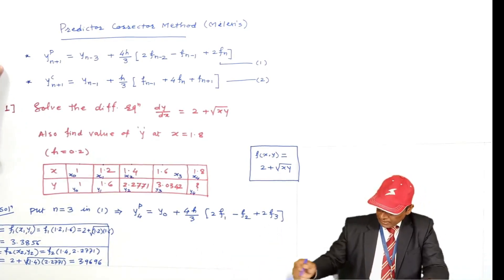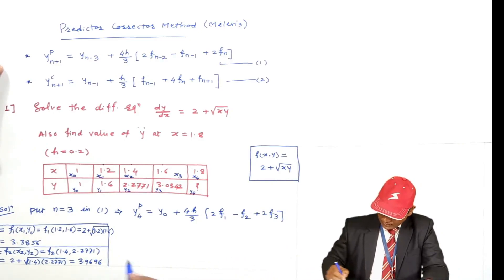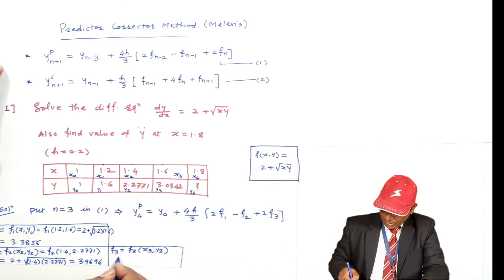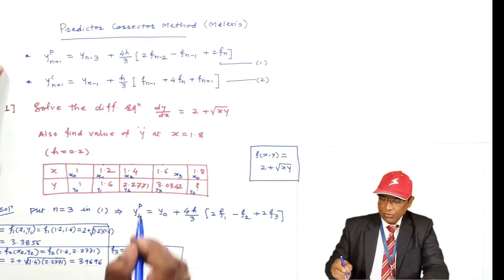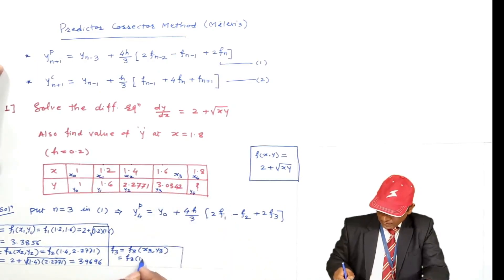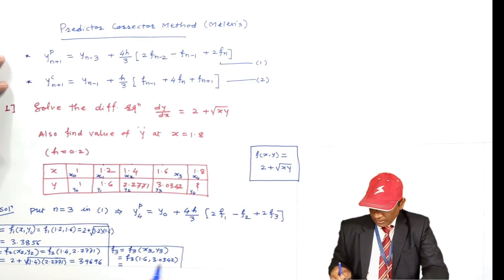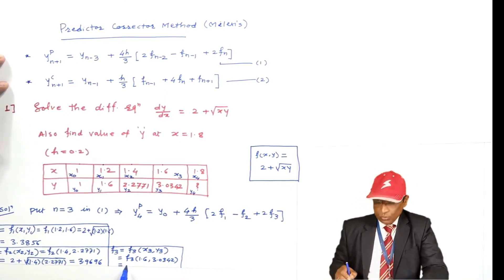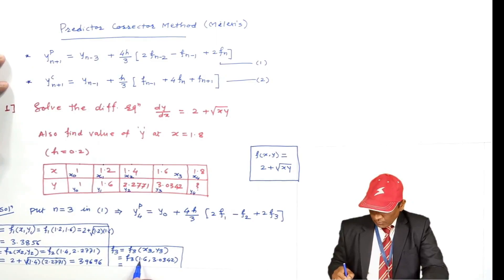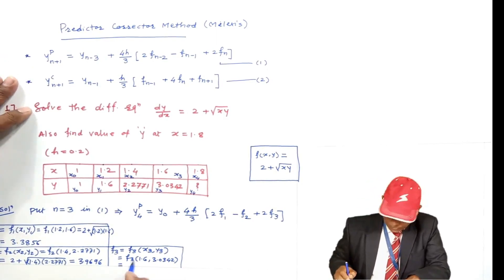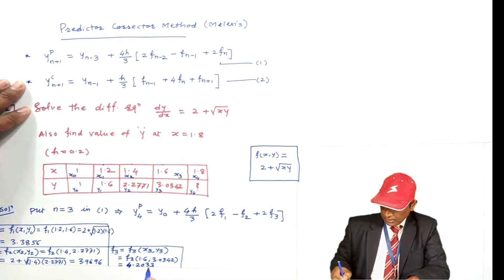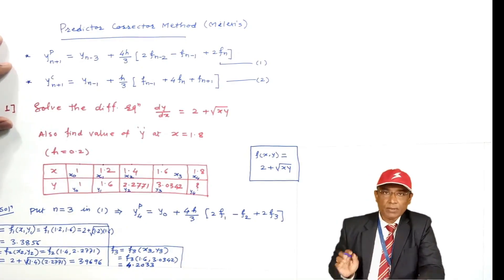Find value of F3 separately. F3 = f(X3, Y3). X3 = 1.6, Y3 = 3.0342. F3 = 2 + √(1.6 × 3.0342) = 4.2033. So F1, F2, F3 have all been calculated.